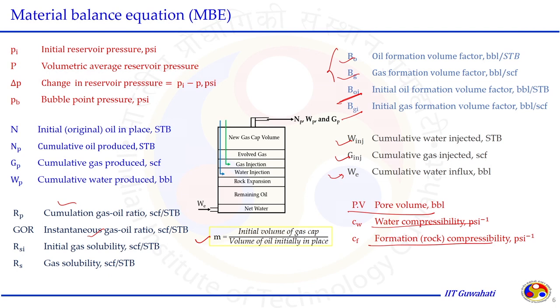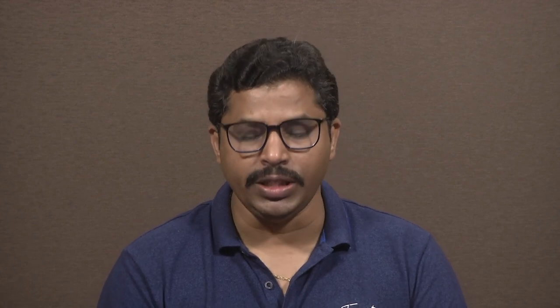The compressibility of water, formation, and oil are of the same order of magnitude — they are very low compressibility substances compared to gas. In general their effect may be neglected, but since we are developing the general material balance equation we are considering all these possibilities in our balance equation.